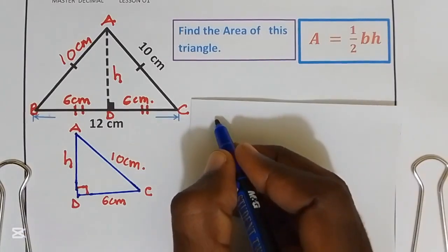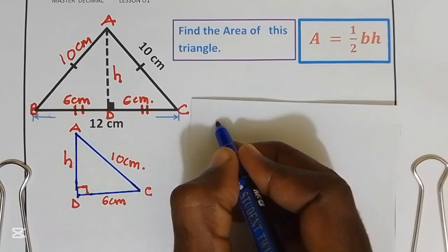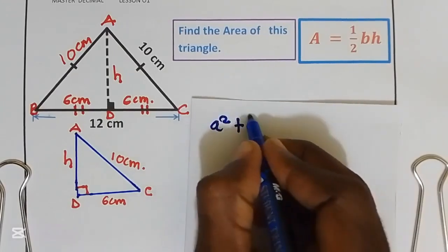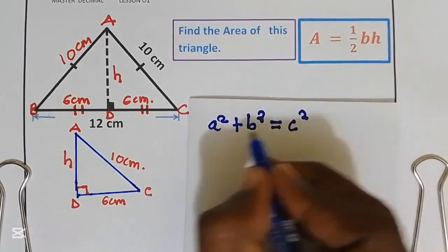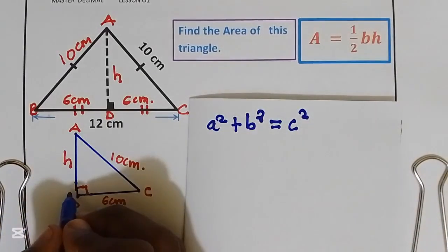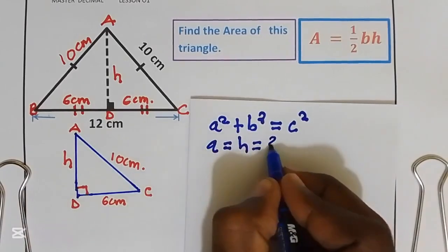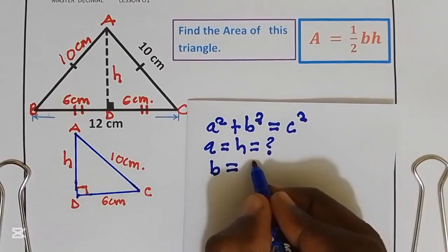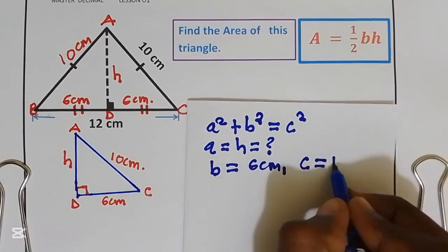Pythagorean theorem states that for a right angle triangle, the sum of the square of the shorter sides is equal to the square of the longer side. That is a² + b² = c². We have a is equal to h, b is equal to 6 centimeters, and c is equal to 10 centimeters.